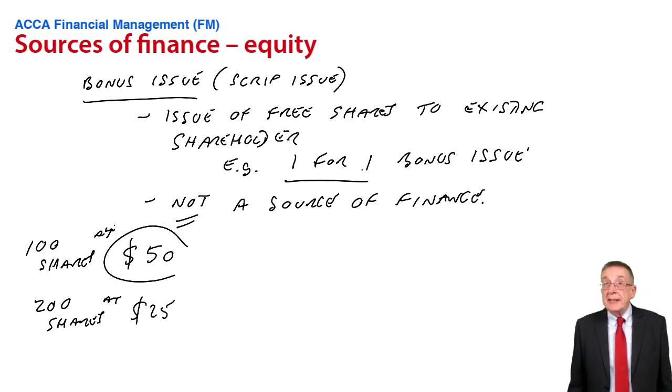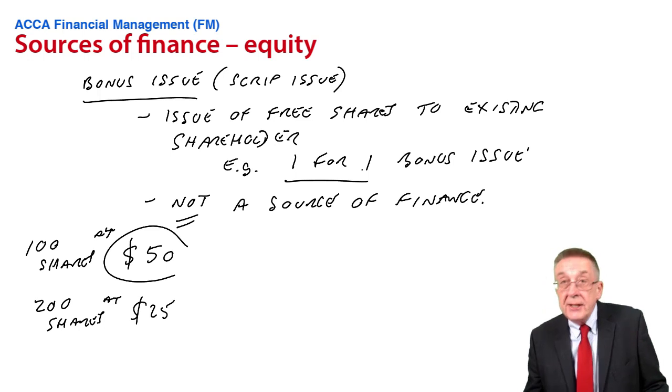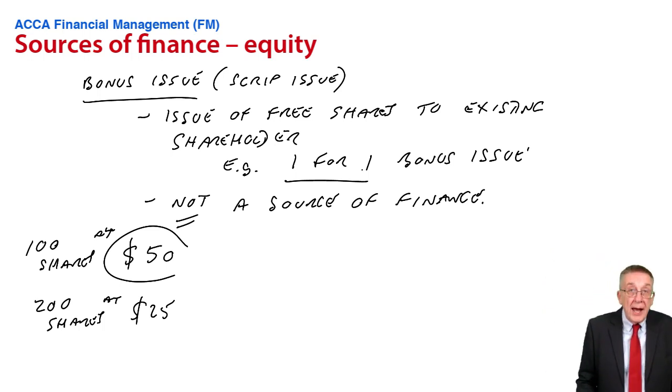But it does reduce the price. And so you do find quite often that big companies, when the share price starts to get high, then it's quite common to have a bonus issue because it does reduce the price and means that people are buying and selling more. They become what we call more marketable. So that's a bonus issue. No numbers involved, just be aware what it is. And be safe, think about why companies might do it.